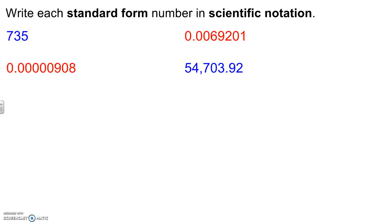Write each standard form number in scientific notation. Give you a little color coding to help. Blue is greater than and our red is going to be our negative reason. First step is to move that decimal, second step is to determine how many, and third step is to write scientific notation. Again we're rounding to three significant figures.